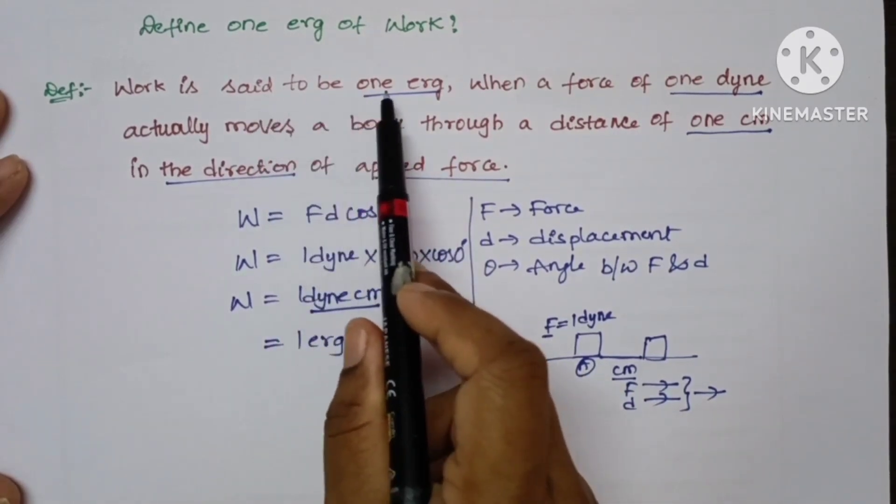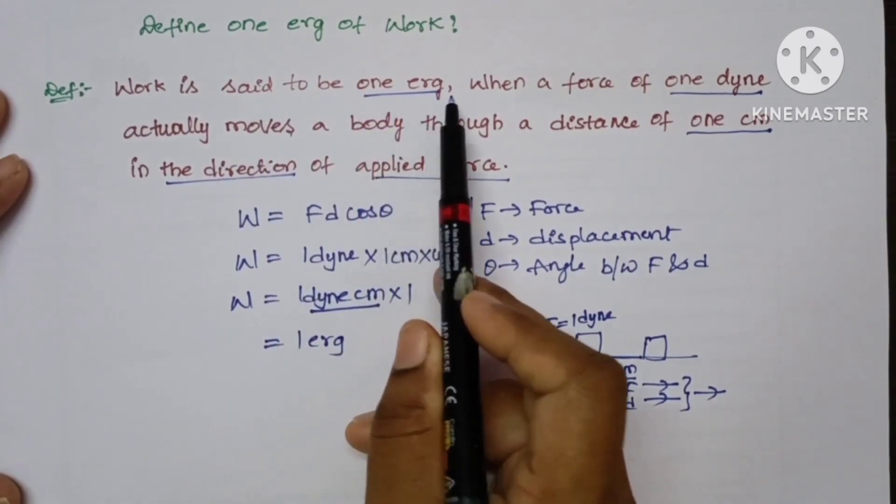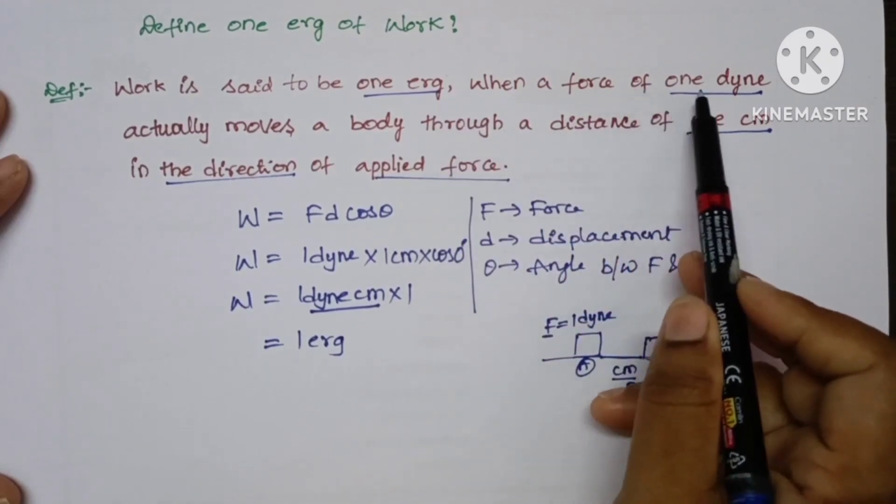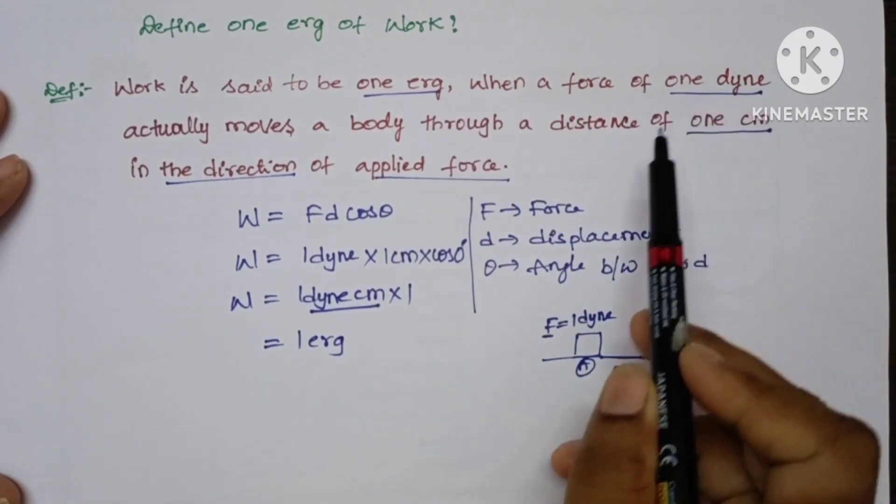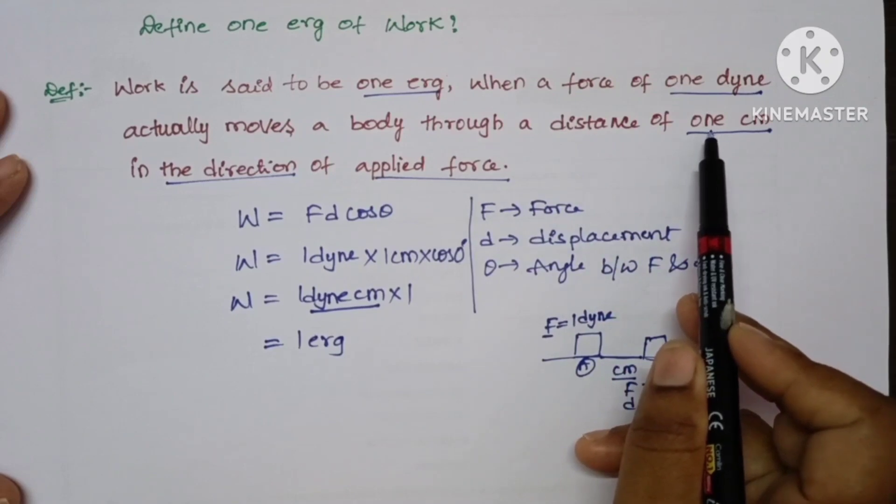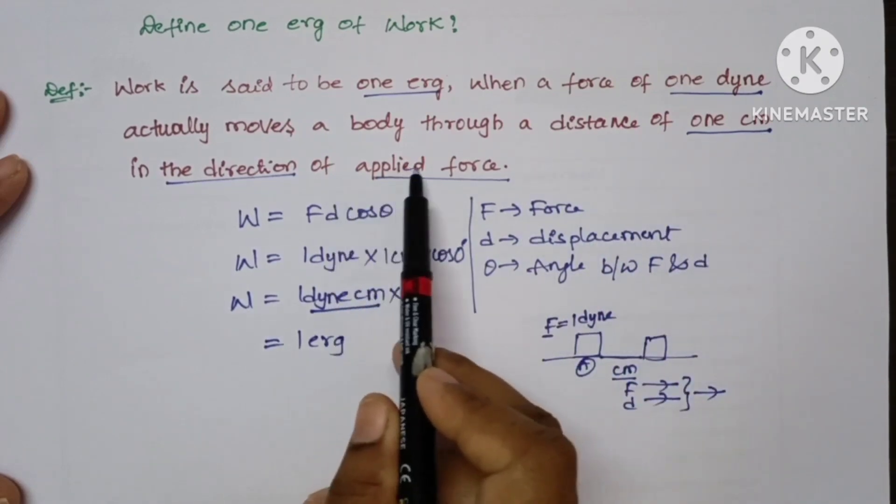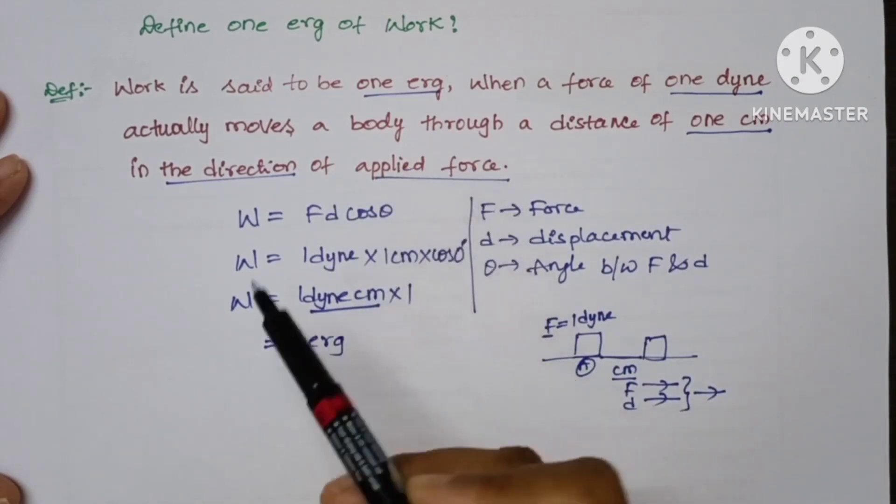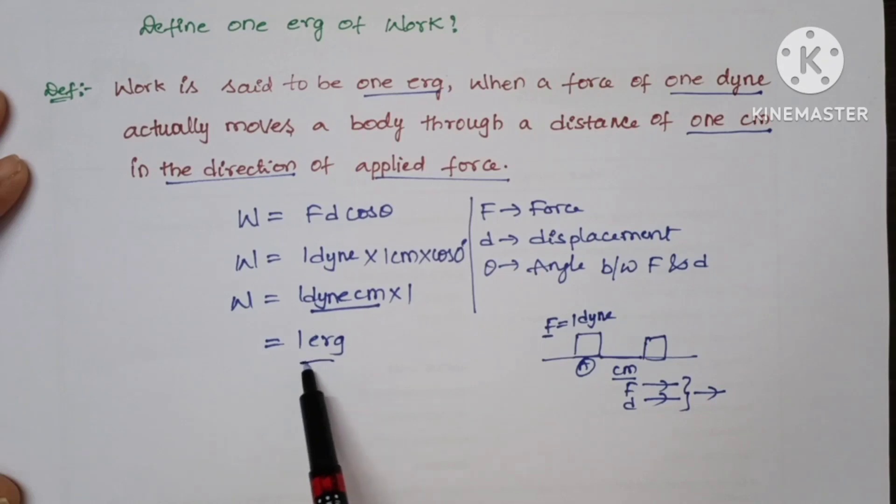To get one erg of work done, we have to apply a force of one dyne. If it moves a body through one centimeter in the direction of the force, then the work done is said to be one erg.